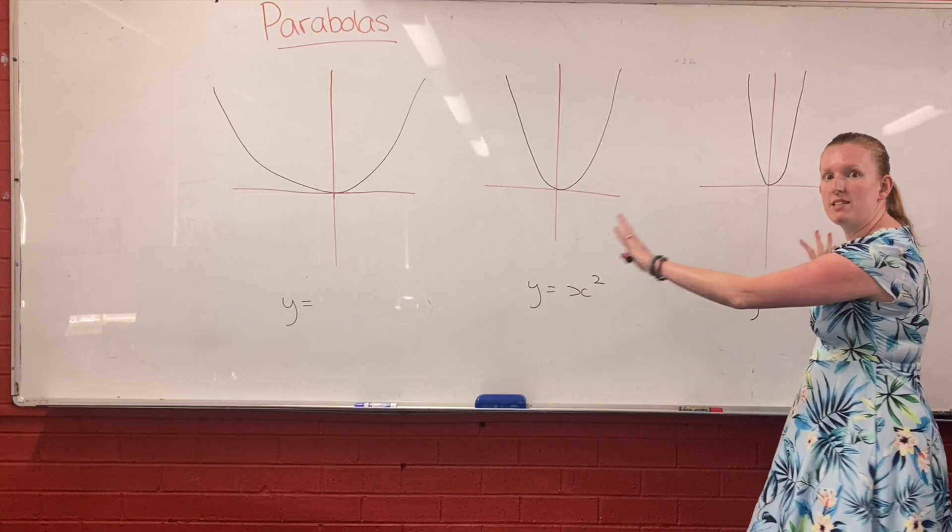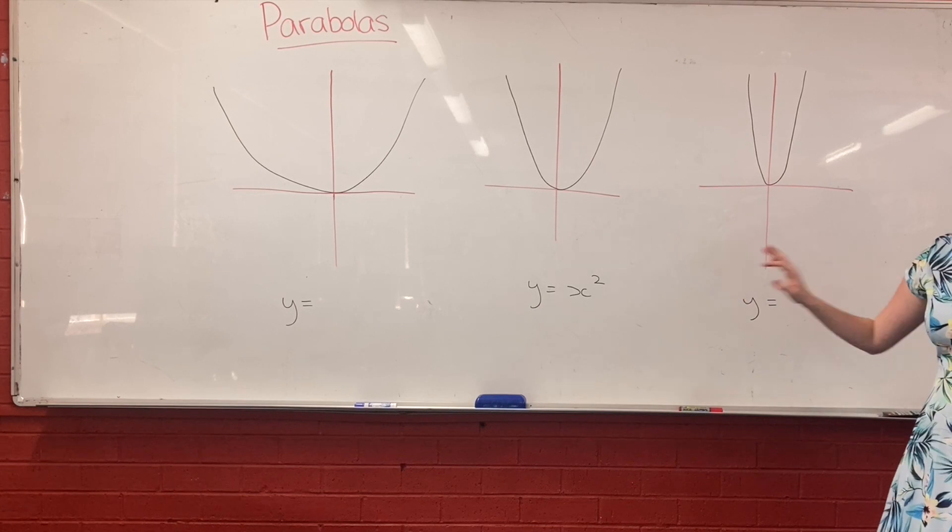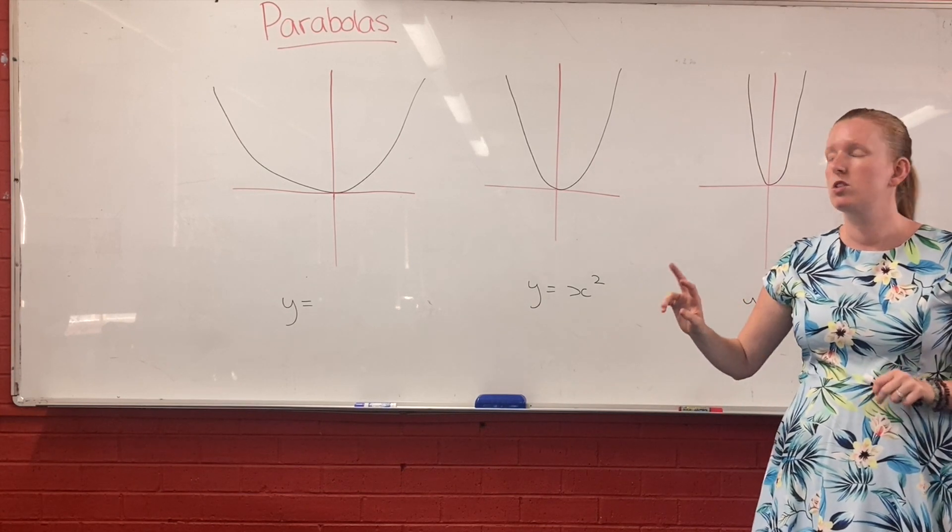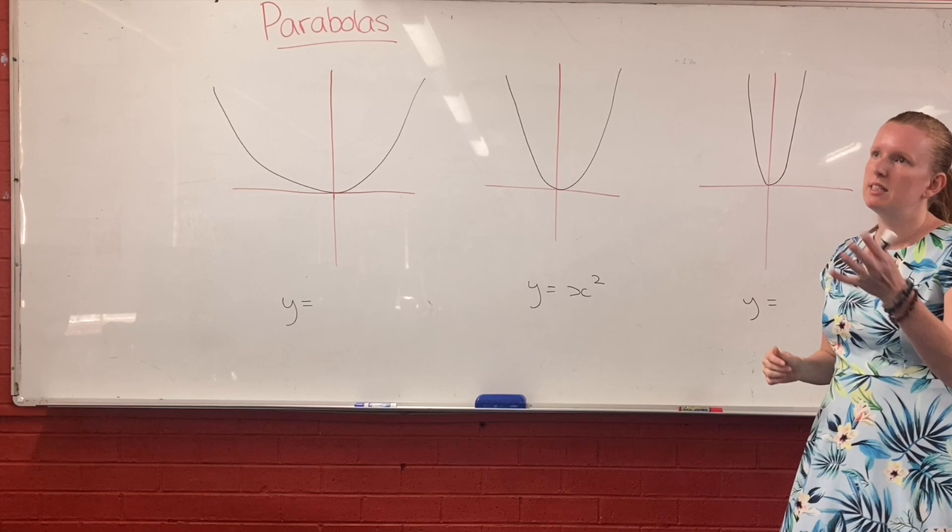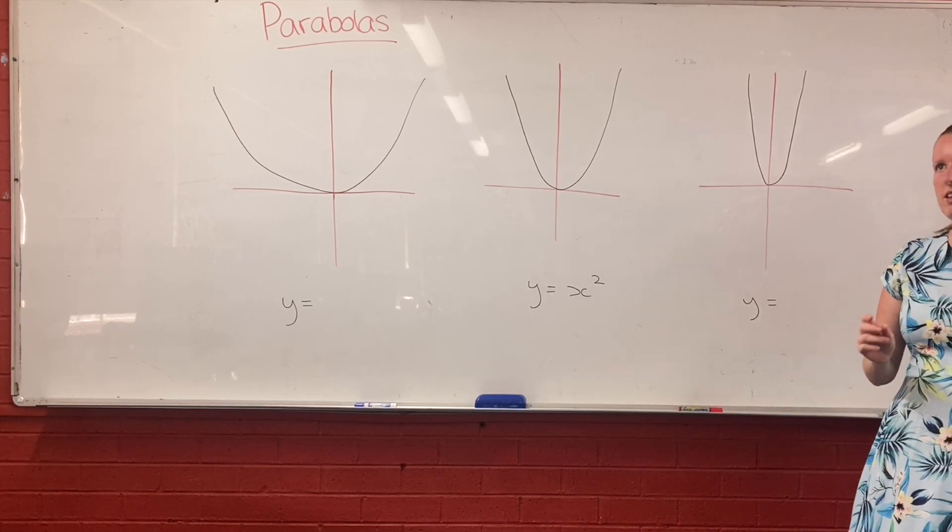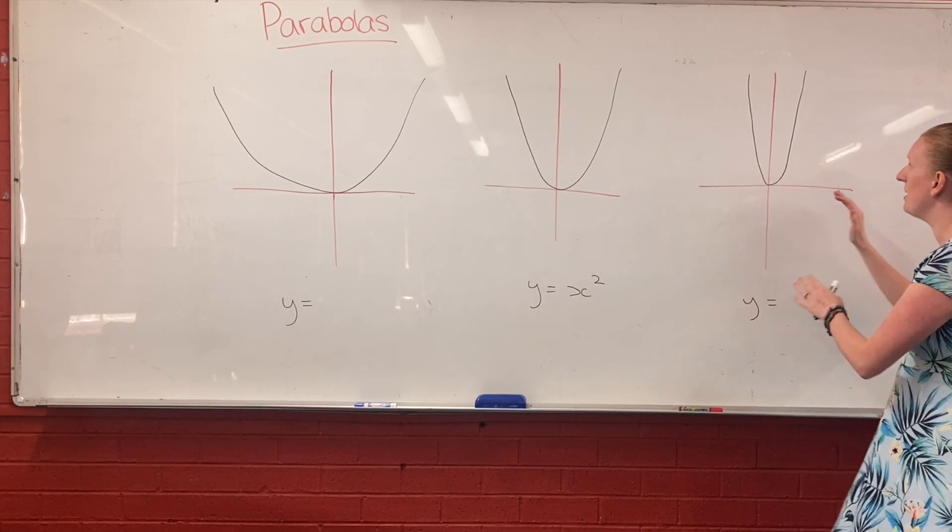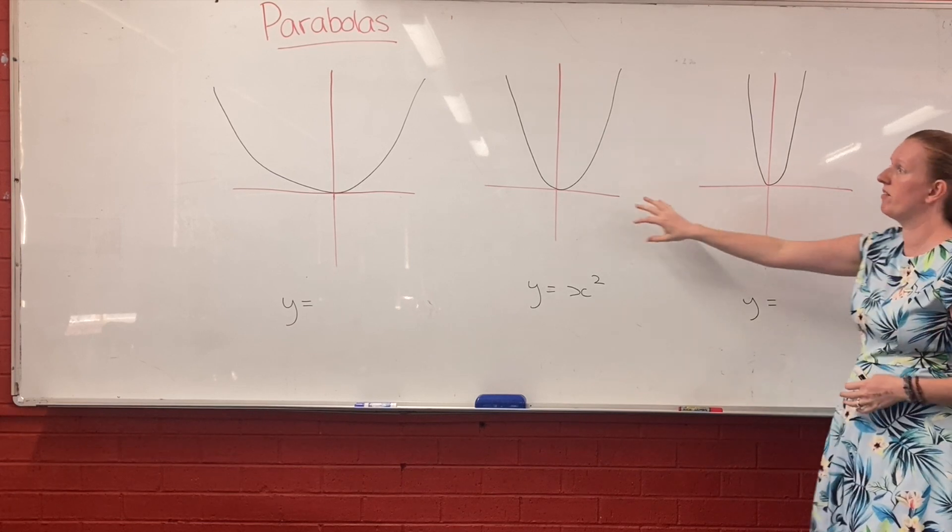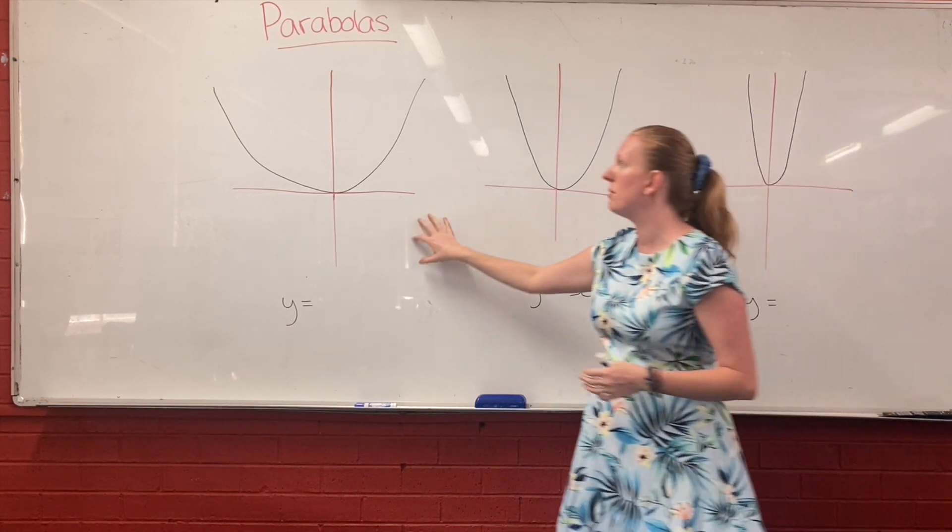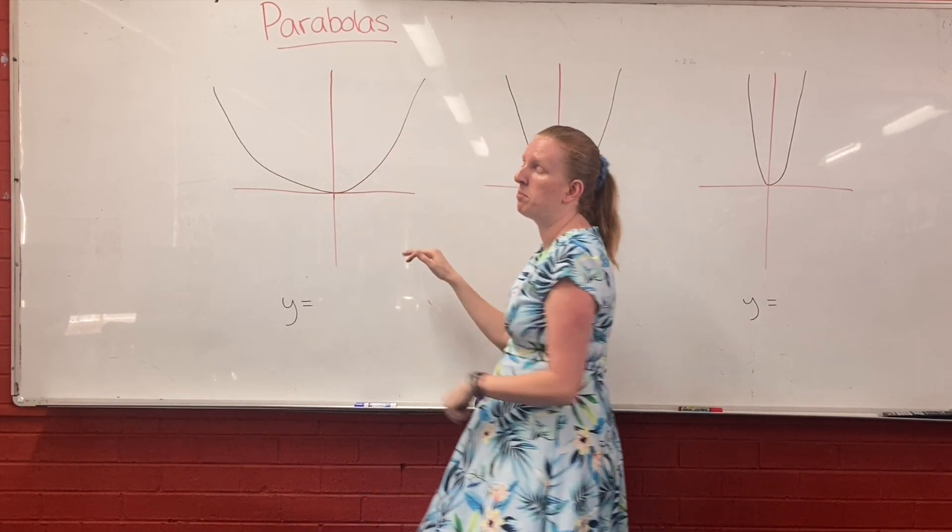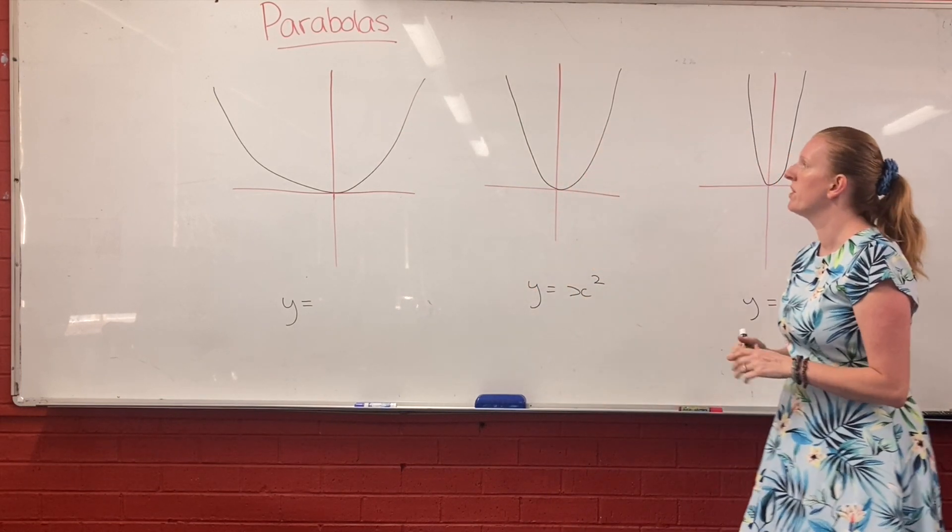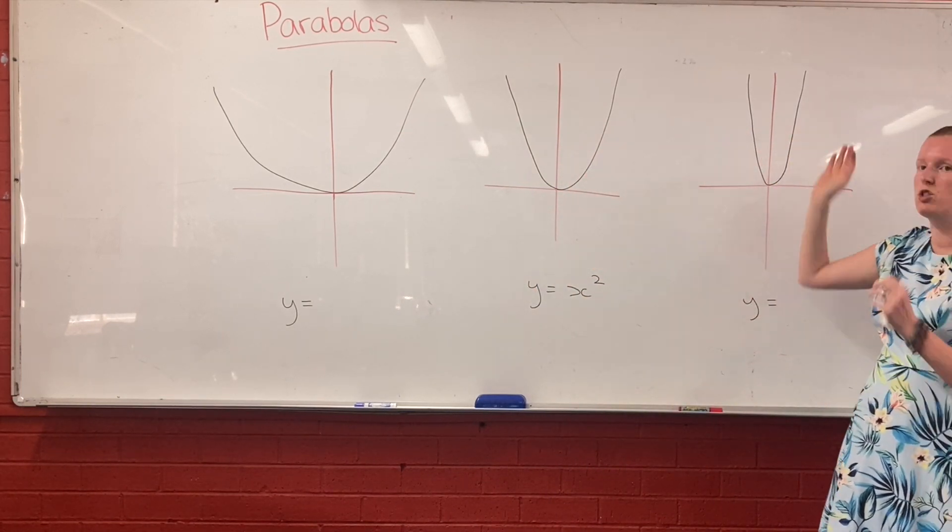Now, on the opposite side, on either side of our regular parabola here, we've got two other parabolas that are different shapes. Well, they are the same shape, but the shape looks a little bit different. Here the shape's a lot thinner than our regular parabola, and here the parabola is a lot wider than our standard parabola.